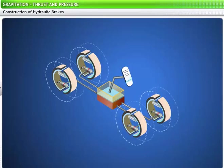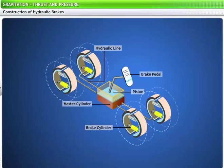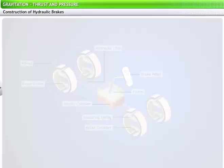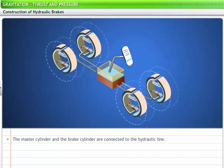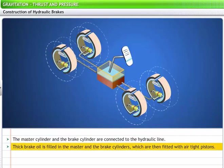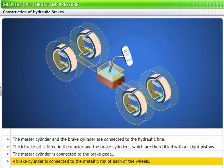Let's see how this principle is applied in the construction of hydraulic brakes. A hydraulic brake system consists of a brake pedal, a piston, a master cylinder, four hydraulic lines, four brake cylinders, eight brake pistons, four wheels, and four restoring springs. Now let's see how hydraulic brakes work. The master cylinder and the brake cylinder are connected to a thick copper pipe called the hydraulic line. Thick brake oil is filled in the master cylinder and the brake cylinders and they are fitted with airtight pistons. The master cylinder is connected to the brake pedal. A brake cylinder is connected to the metallic rim of each of the wheels.